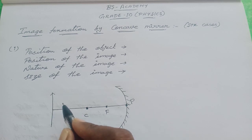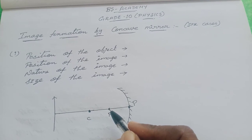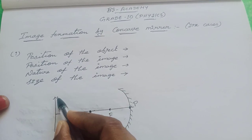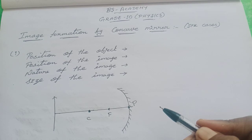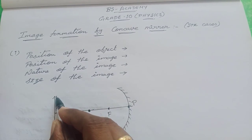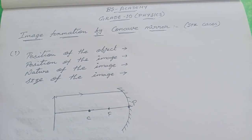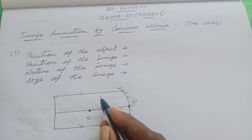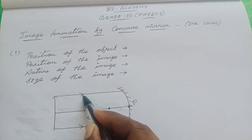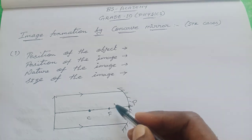The light rays emitting from this object are going to be incident on the mirror. After falling on the mirror, they get reflected. For clear understanding of the ray diagram, we are using only two incident rays. This is one of the incident rays, and this is another incident ray.